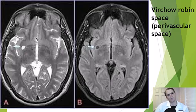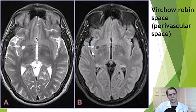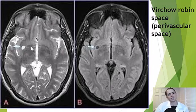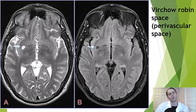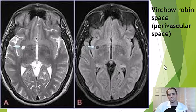Arachnoid granulations are the tissue that allows resorption of the cerebrospinal fluid back into the venous system — completely harmless. Sometimes we see cerebrospinal fluid structures deep within the brain tissue that could mimic a small old stroke, but these are actually benign perivascular spaces, or collections of normal cerebrospinal fluid around the blood vessels, also known as Virchow-Robin spaces.